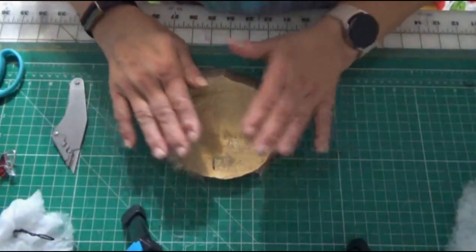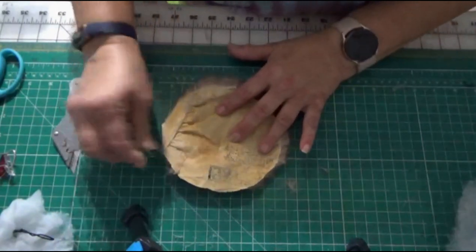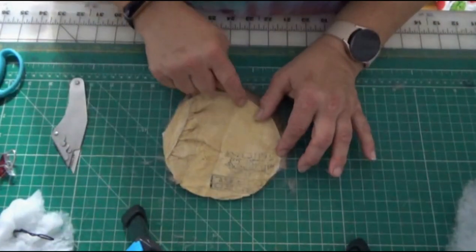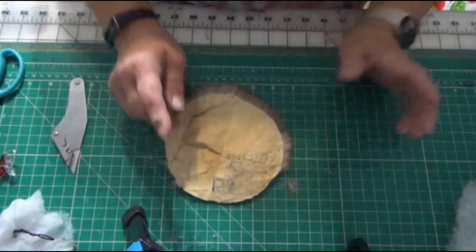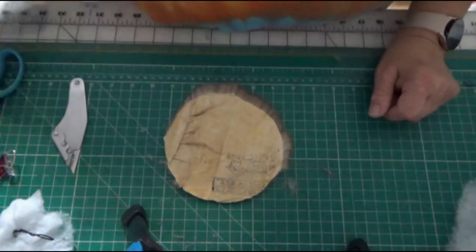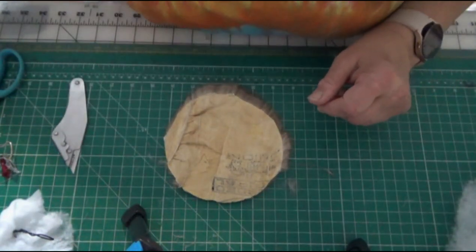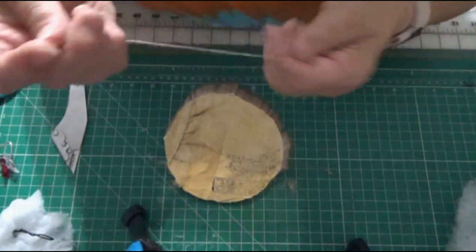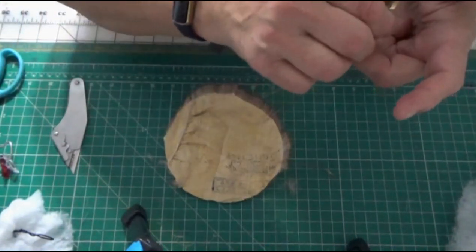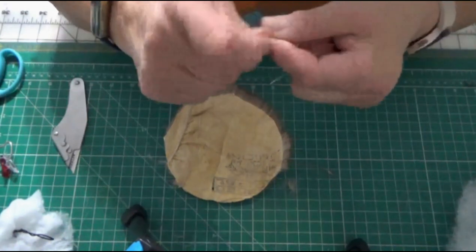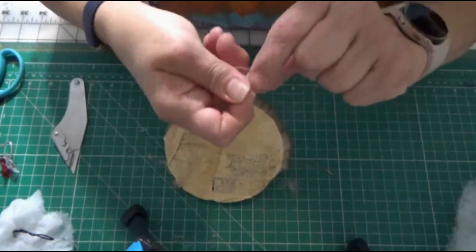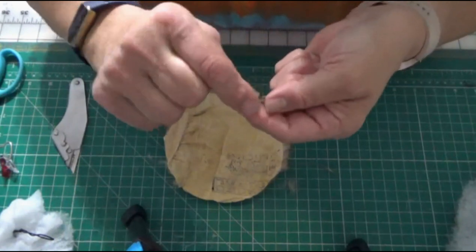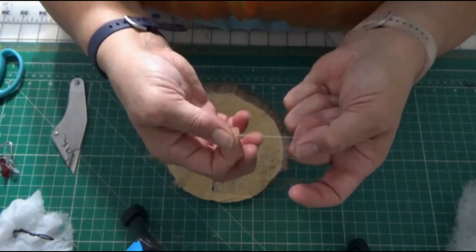Now some people like to put holes all the way around the fur. I really don't. I just use my Glover's needle. It has a triangular point, it is very sharp. And now I am getting ready to do the next part.